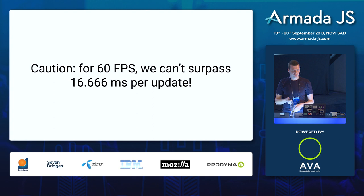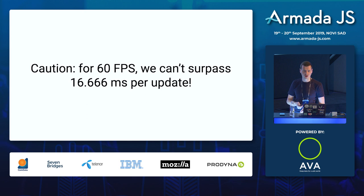There is a caveat: for 60 FPS performance, you cannot surpass a total frame time of 16.666 recurring milliseconds, otherwise you get jank.